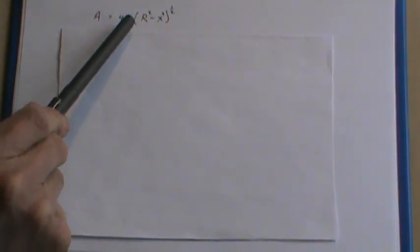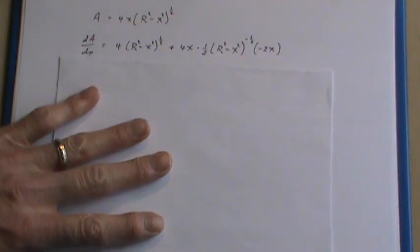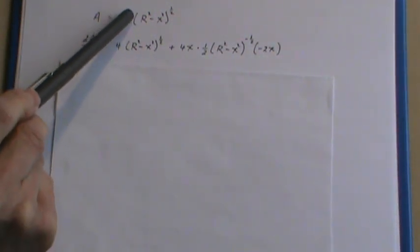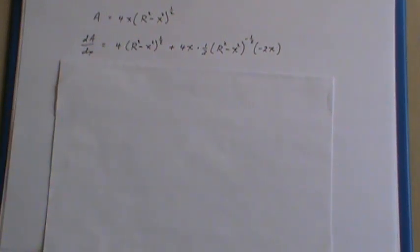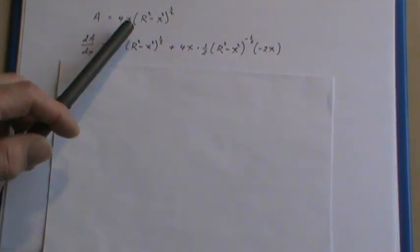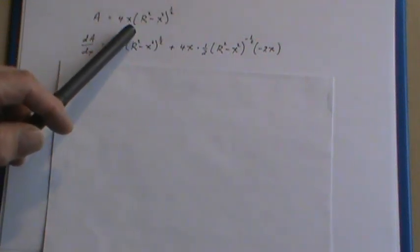Now when I take the derivative, I'm going to have to use the product rule. So the derivative of A with respect to x is the derivative of the first part, which is 4 times the second part, plus 4x times the derivative of this. Now this involves the chain rule.